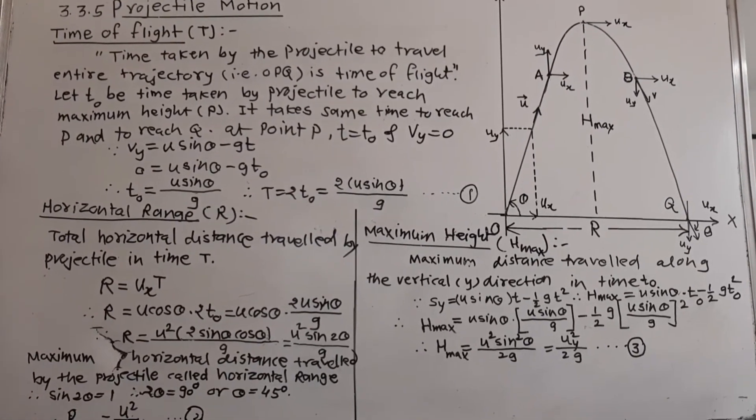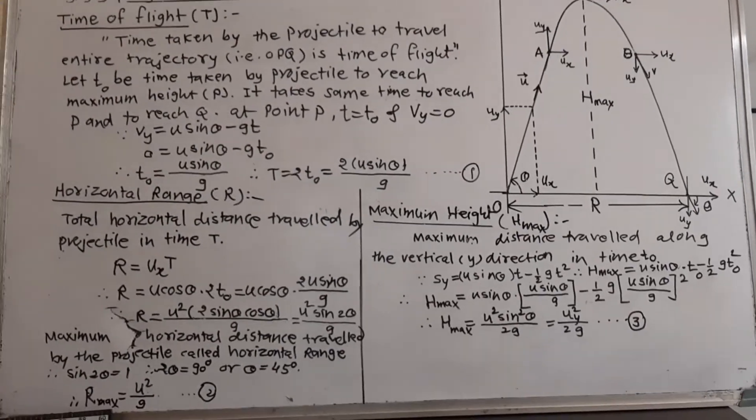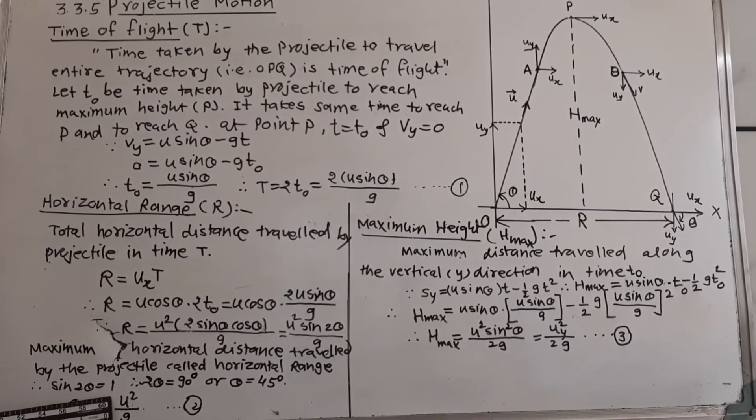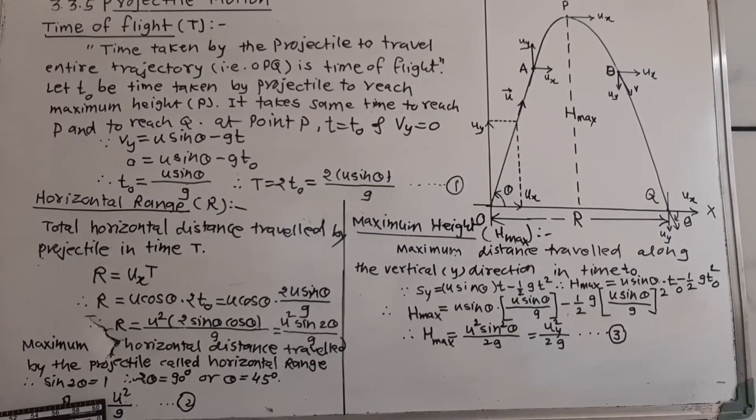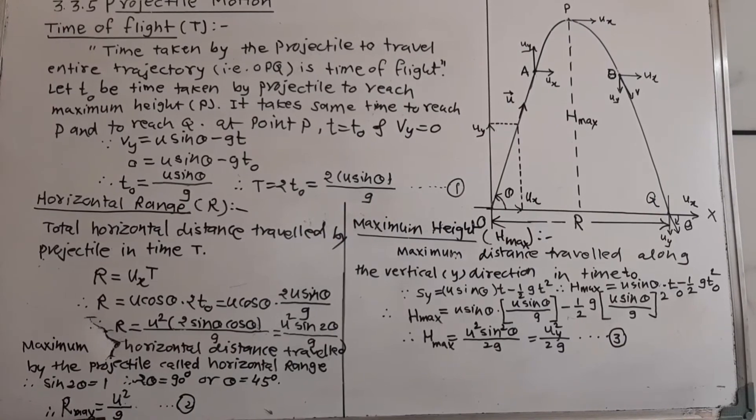See, from this equation R max, the maximum range depends upon number 1, initial velocity of the projectile, 2, acceleration due to gravity at that place.